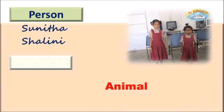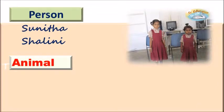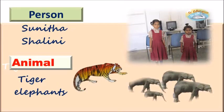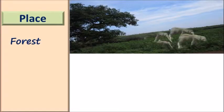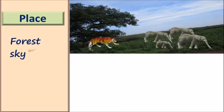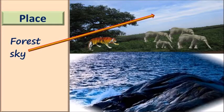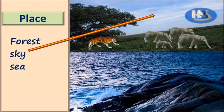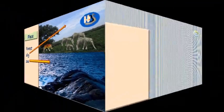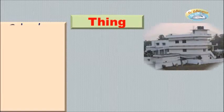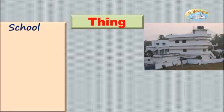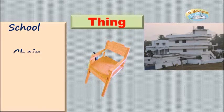Now children, read out the nouns concerned with persons and animals. Here are some examples — find out more nouns concerned with persons and animals. Look here — some more examples concerned with places. Now identify the nouns concerned with things.